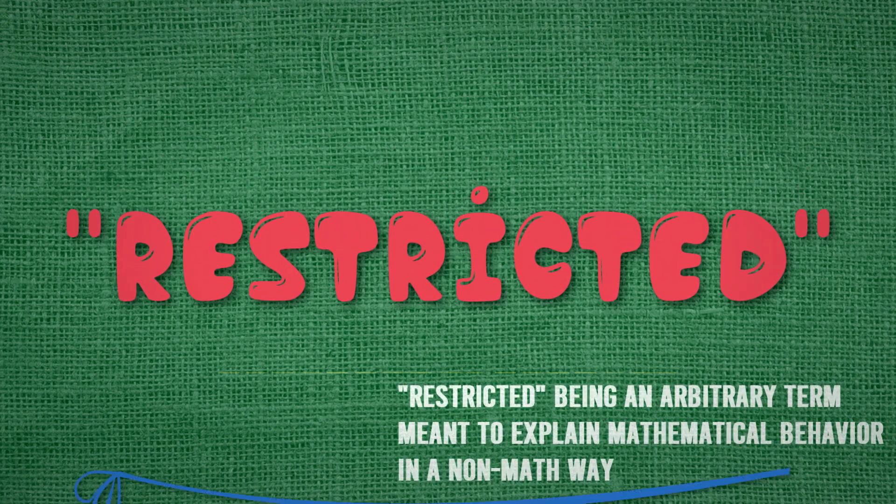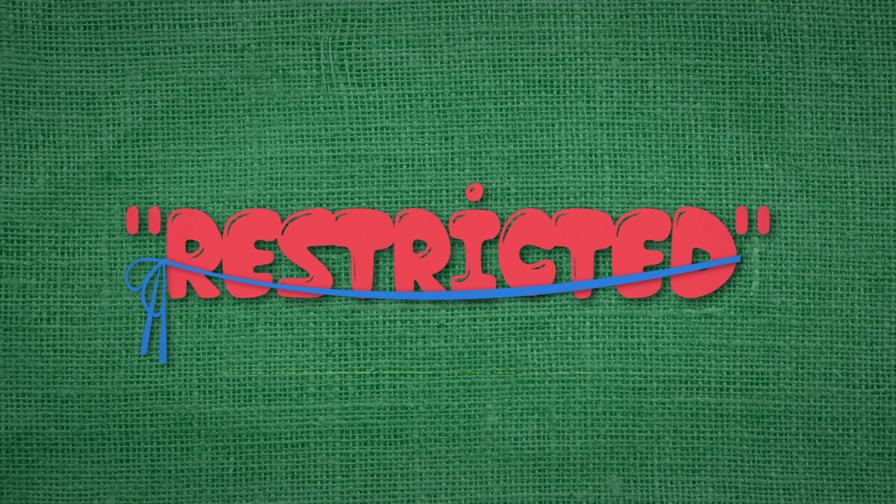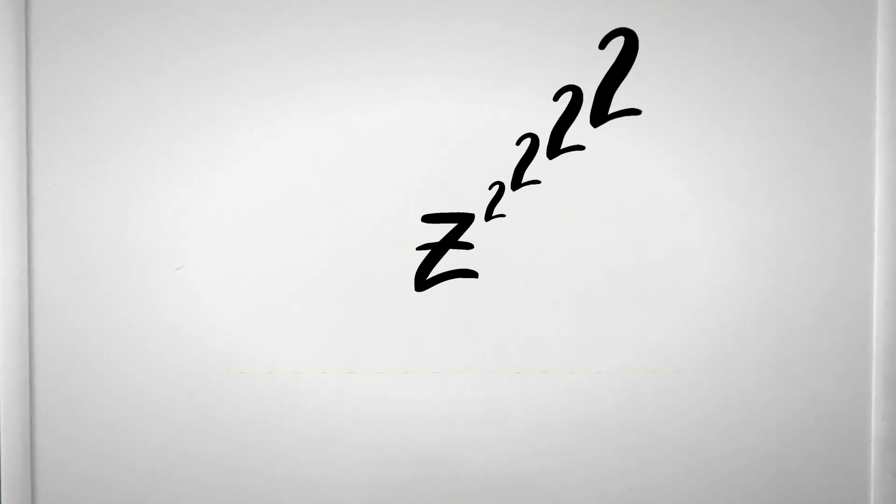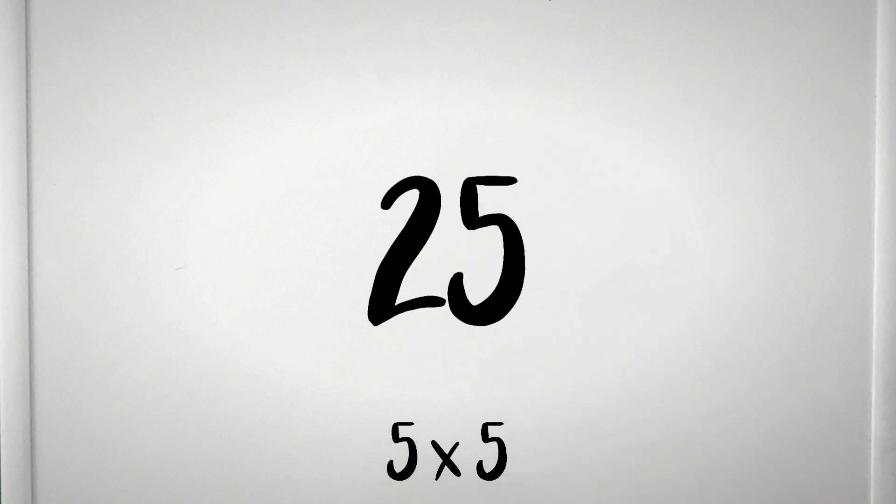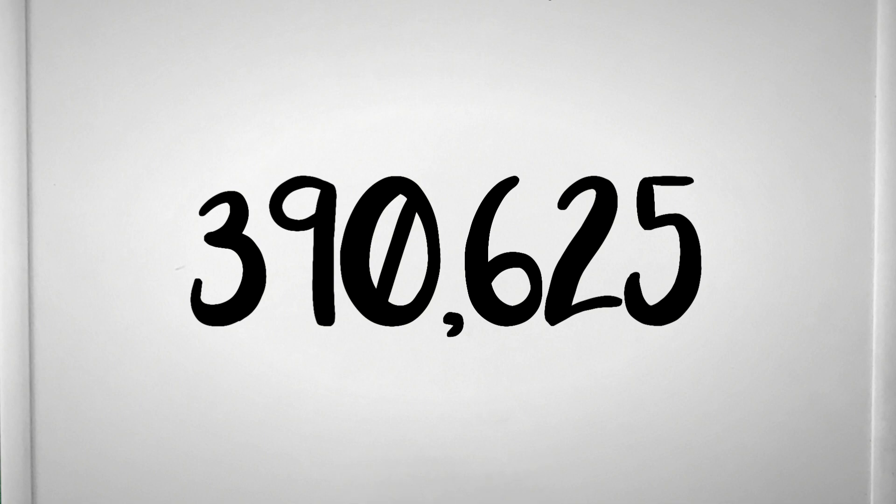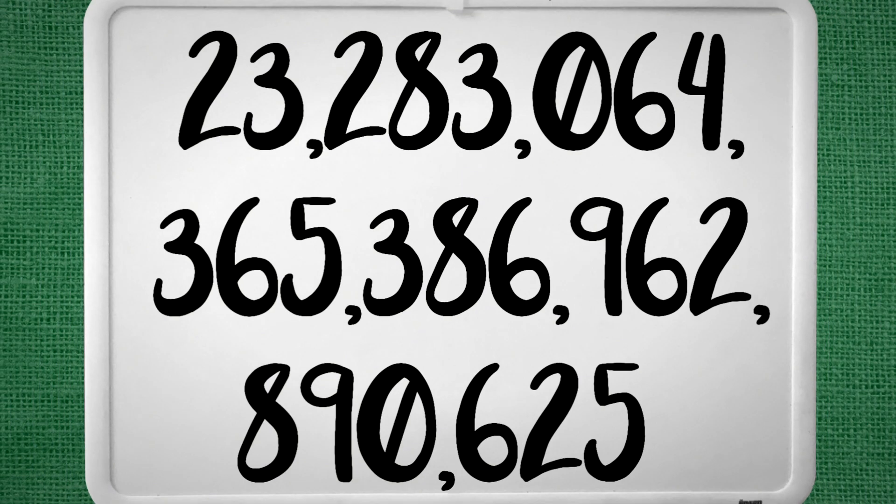Now, what does it mean for an iteration to be restricted? To explain this, let's use a simple iterative operation where we take a number, square it, and keep squaring that answer, and let's use the number 5 as our first z value. In the beginning, the numbers we get are pretty manageable, but then it quickly gets out of hand, with the number skyrocketing in size.